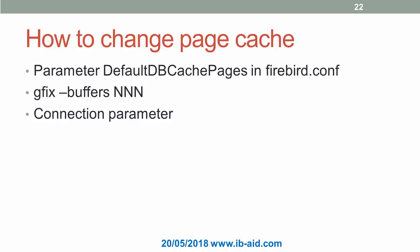There are three ways to change the page cache. The recommended way is to change the parameter DefaultDBCachePages in the Firebird configuration file — note this applies to all databases on the server. The second way is to set the value of page buffers directly in the database header using the command gfix -buffers, which overrides DefaultDBCachePages. The third option is to set page buffers per specific client connection, but this is rarely used.